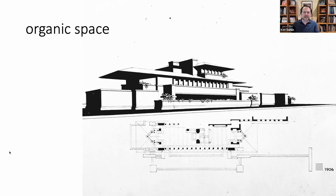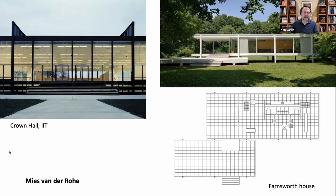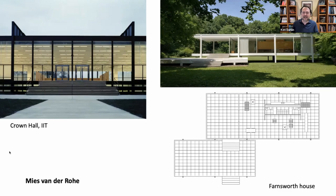Before showing how Fallingwater expresses organic space, I want to look at how Wright thought about organic space — and why this wasn't simply about breaking down the box and opening up the corners. The Roby House, along with other Wright prairie homes of the first decade of the 20th century, had a major impact on European modernist architects. Mies van der Rohe took this idea of open space further with his universal space — buildings set in an unbroken grid extending infinitely in all four directions, a sort of architectural placelessness.